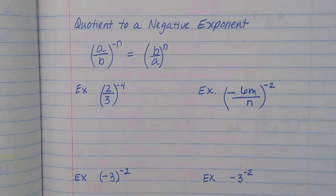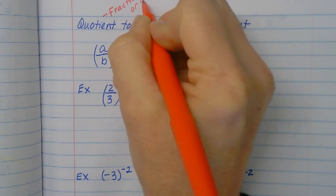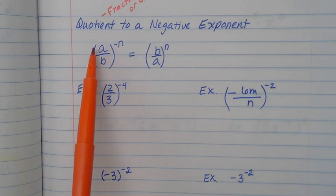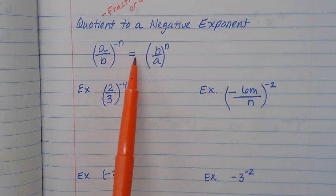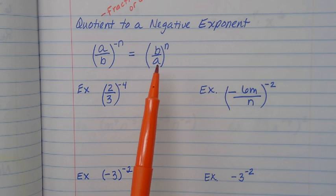So this rule is called quotient to a negative exponent, which really just means a fraction or division. When I have a fraction or division inside parentheses raised to a negative exponent, the fraction just gets flipped — changed to its reciprocal — and the exponent becomes positive.